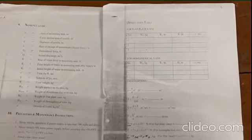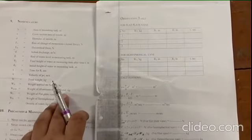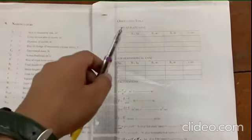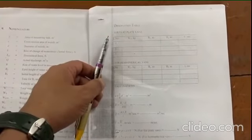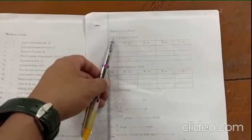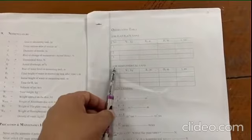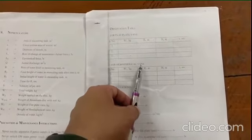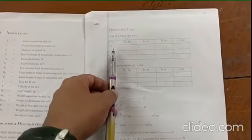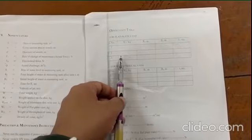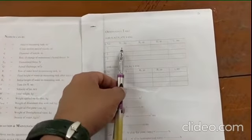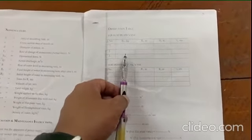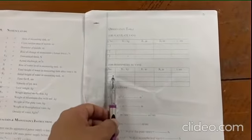After the experiment, we have to prepare two tables of the data that we have determined from the test. First table is for flat vane, second table for hemispherical vane. For each vane, the experiment is repeated three times by using different weights. Here is the first table, this is the second table.